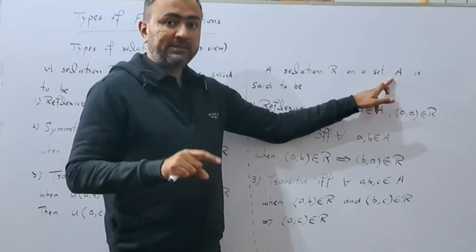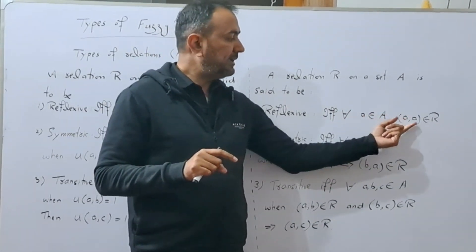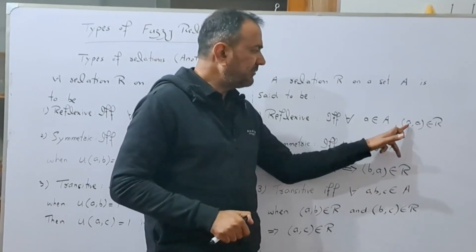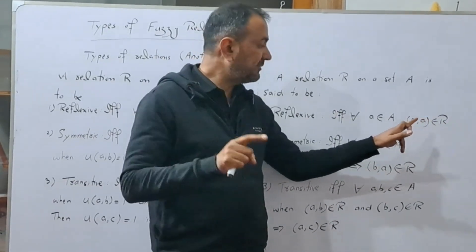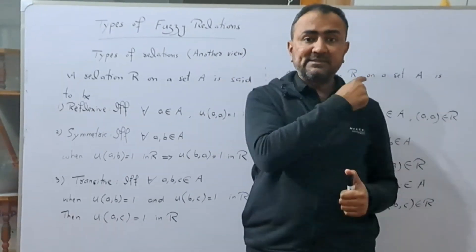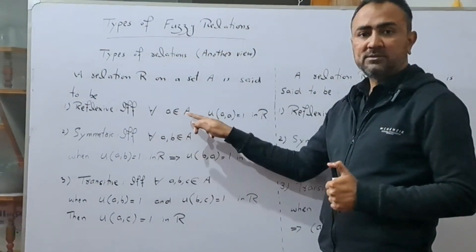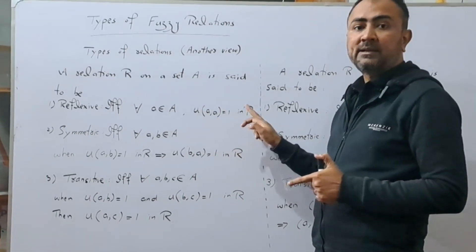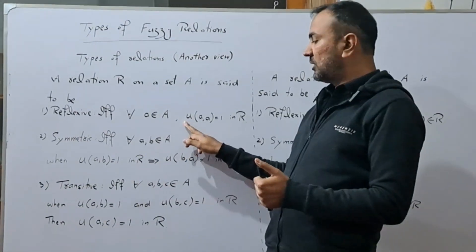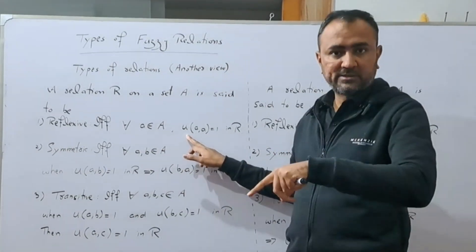Suppose we have a relation R on a set A. This relation is reflexive if and only if for every element a belonging to A, (a, a) belongs to R — each element must relate to itself. This means the membership value of (a, a) in R is 1. So we translate this: a relation R on set A is reflexive if and only if for all a ∈ A, μ(a, a) = 1 in R.